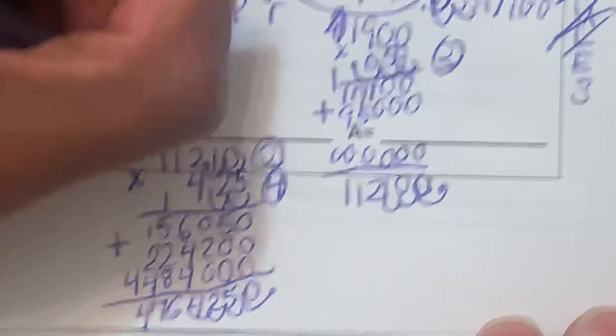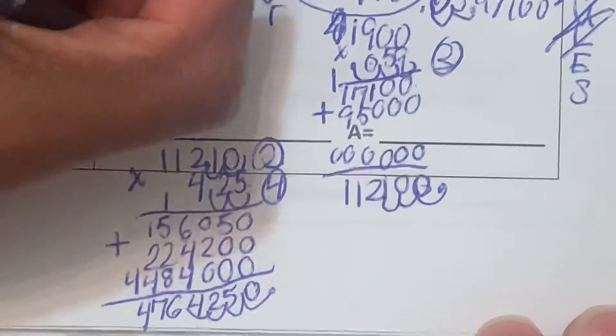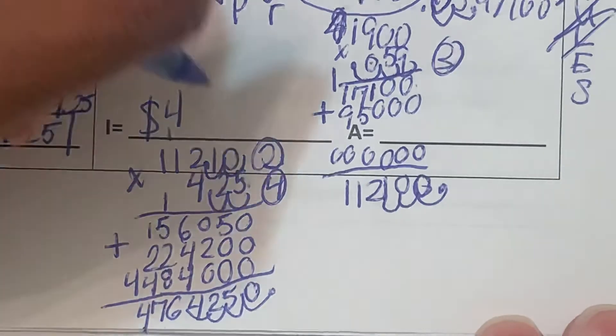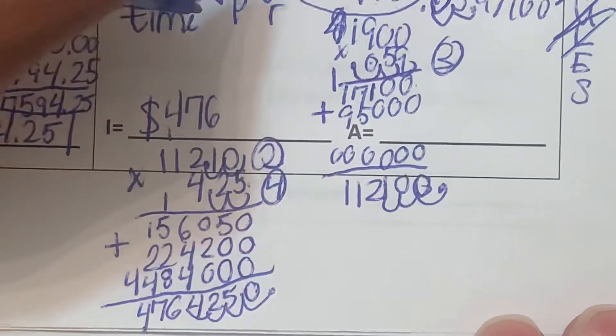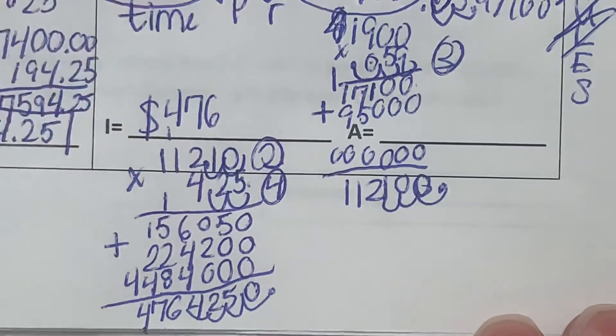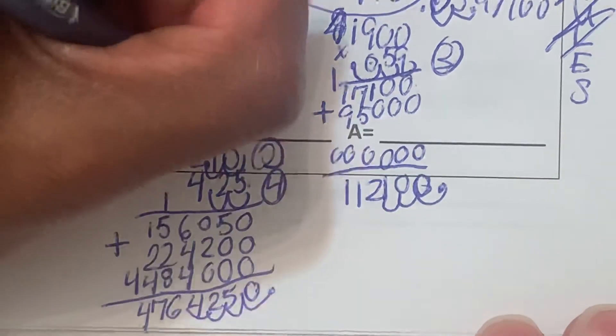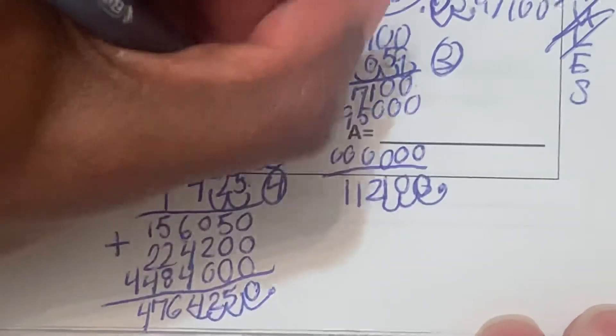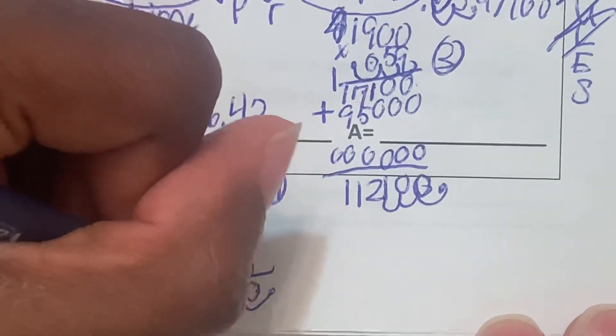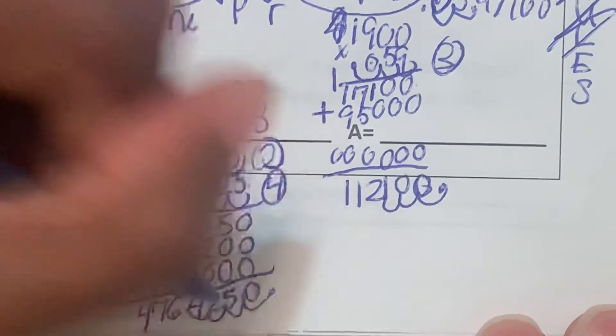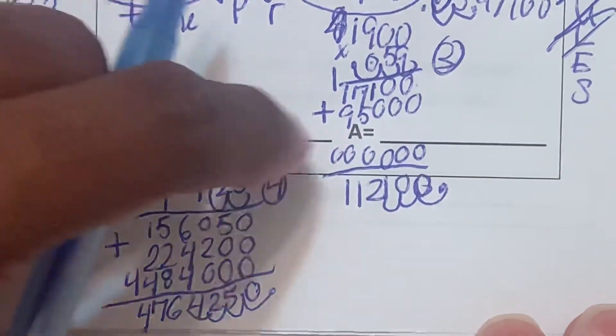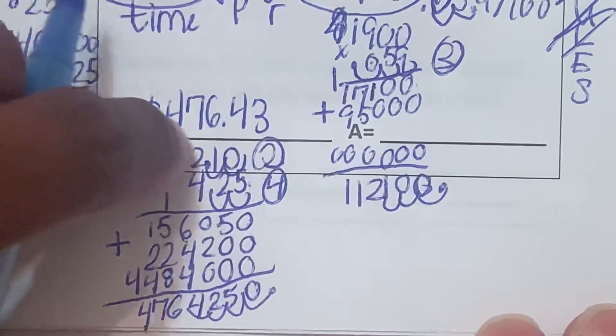So the total interest is going to be $476 and 43 cents, because this 5 rounds the 2 up.